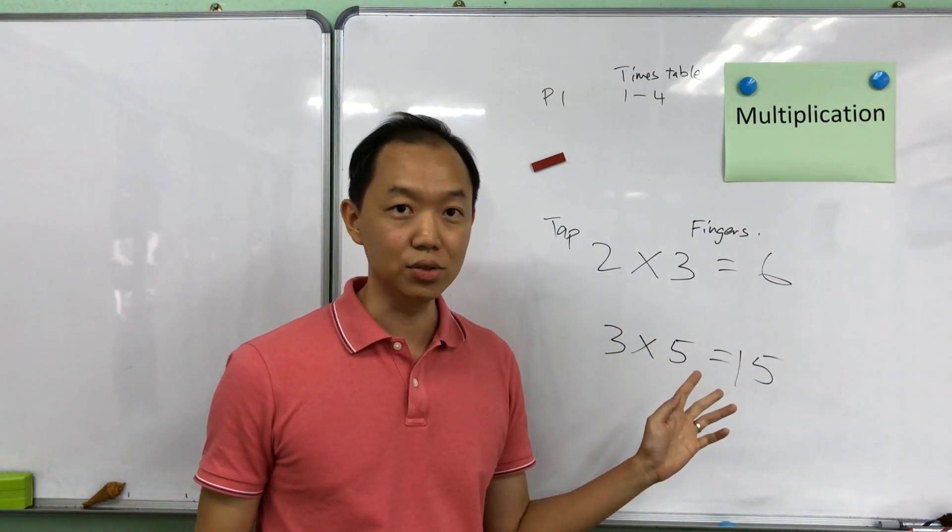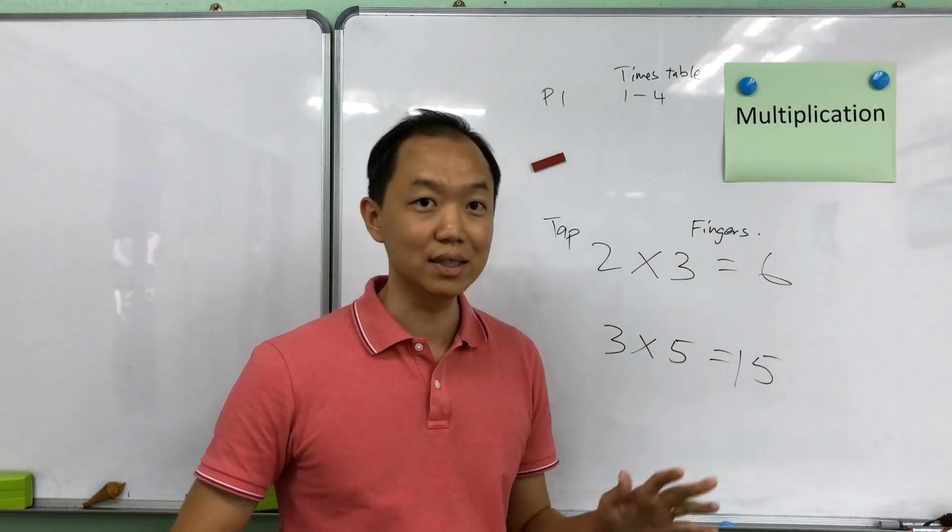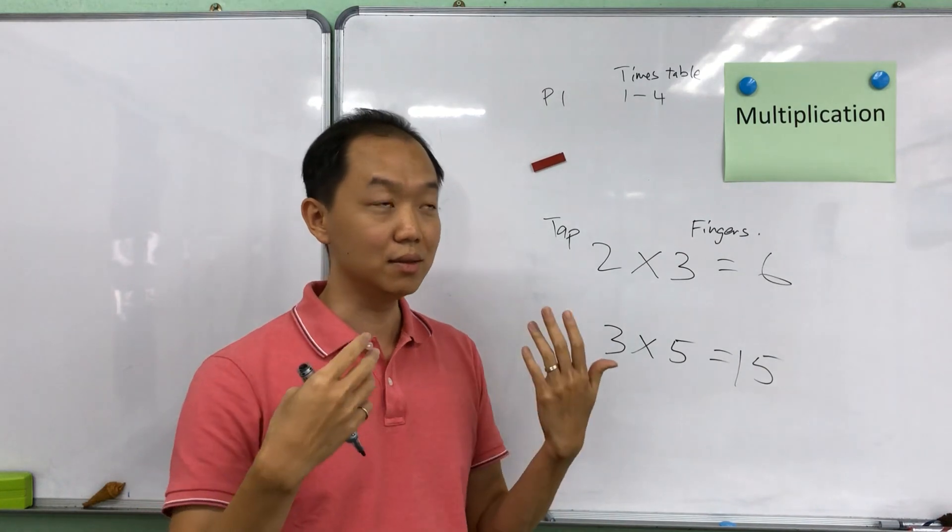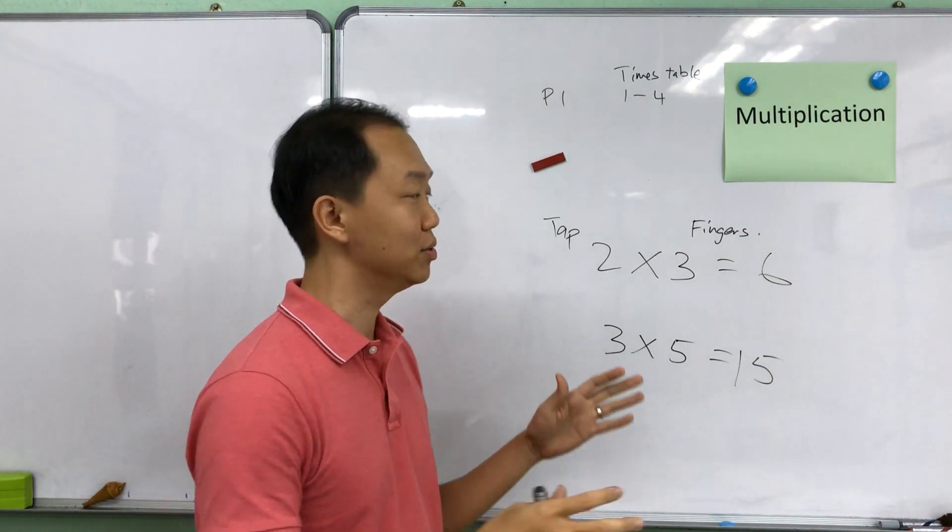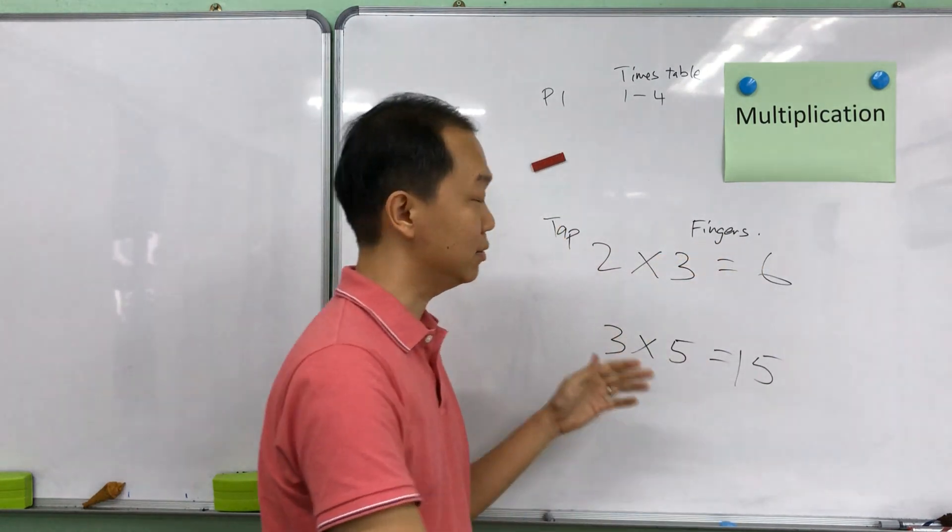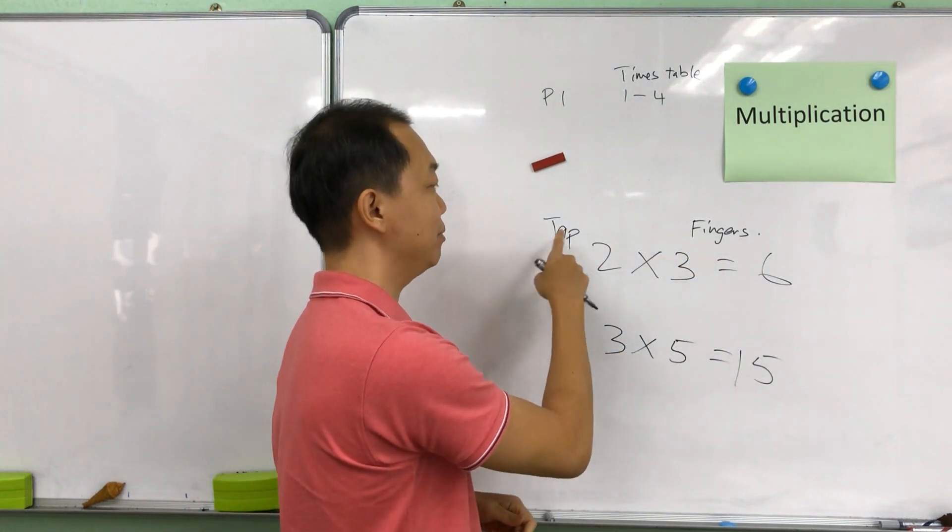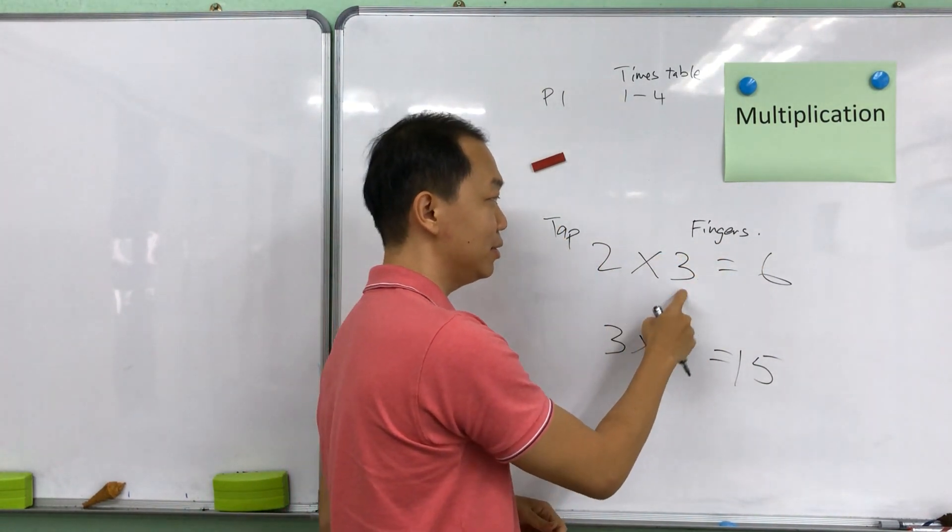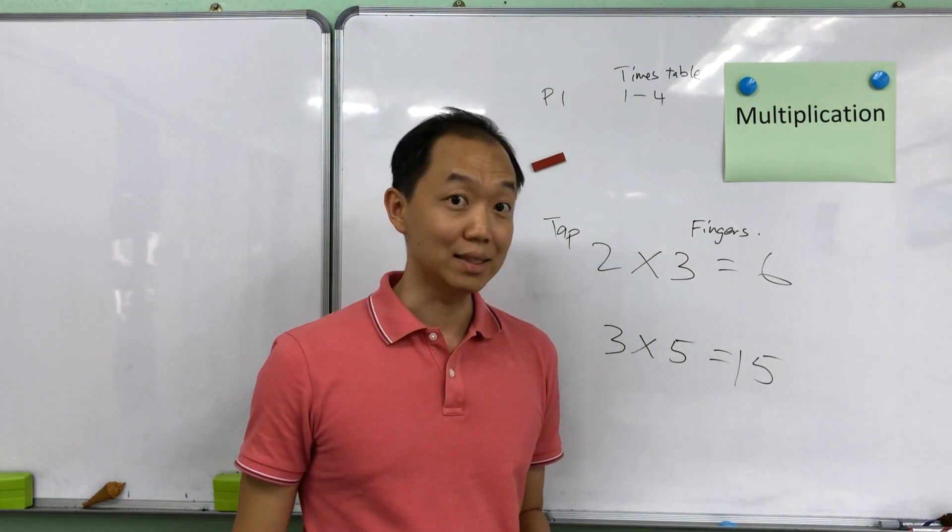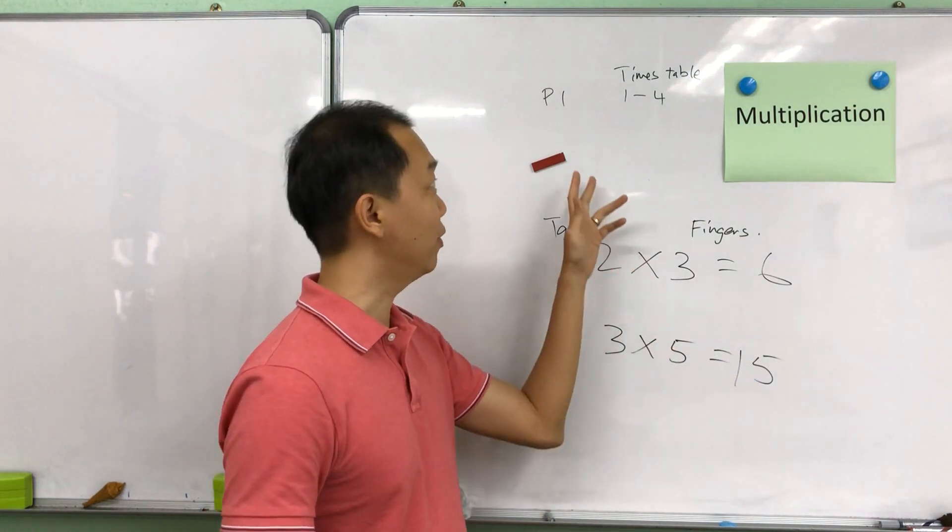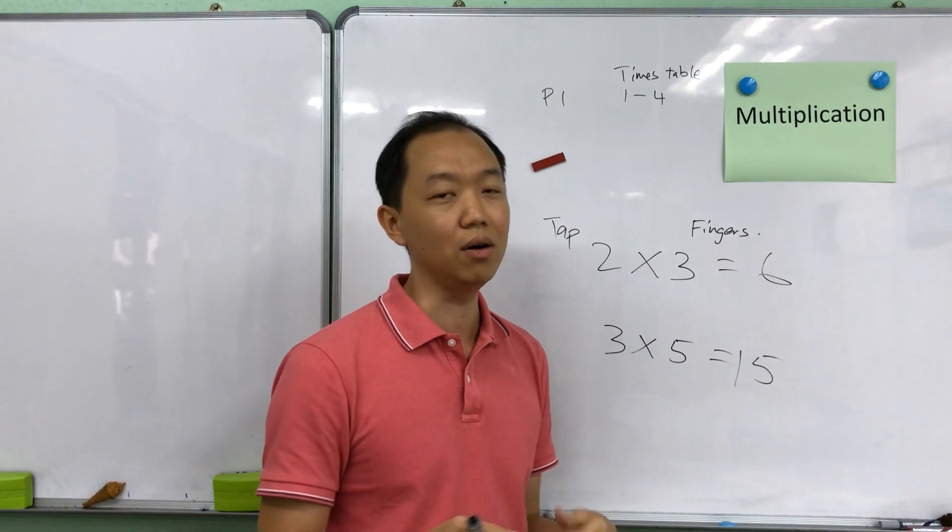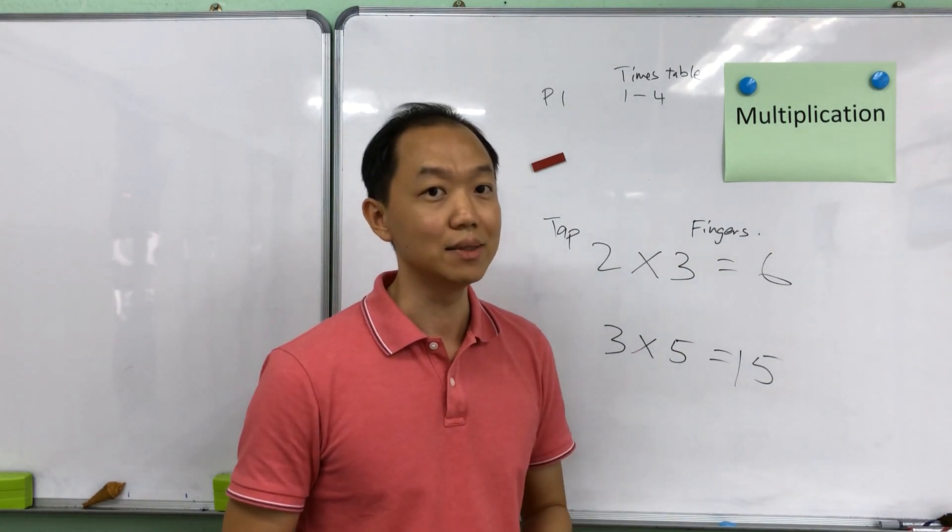So this method is used when the student doesn't have any paper, just using fingers. The algorithm or the method is to just put the word tap and put the word fingers here. This will remind them to tap 2 times on 3 fingers or tap 3 times on 5 fingers to obtain the answer. So once again this is only for P1 students which is useful for 1 to 4 or 5 times table.